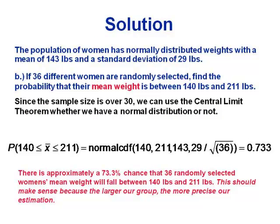Now for a group of 36 randomly selected women: what's the probability their mean weight is in that range? The sample size is over 30, so we're safe. The problem also stated the population is normally distributed, so we'd be okay anyway. Using normalCDF between 140 and 211, we keep the mean of 143, but adjust the standard deviation: 29 divided by the square root of 36, which equals 29 over 6.